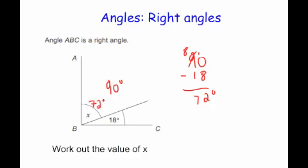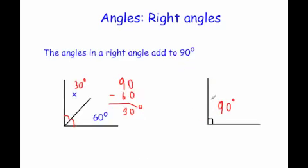If you ever see a right angle symbol, you can write 90 degrees beside it. If you're ever given two angles which form a right angle, you can take the angle they give you away from 90 degrees to find the missing angle. If they give you three angles making 90 degrees, you would add the two they give you and take it away from 90 to find what's left.